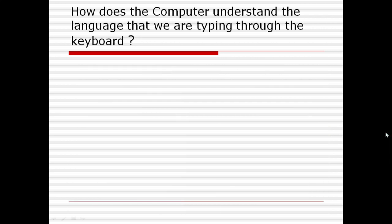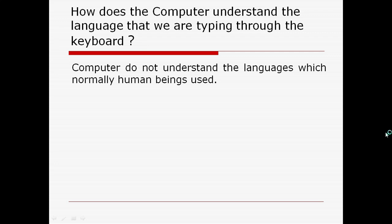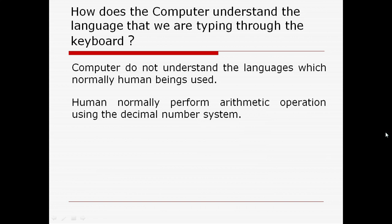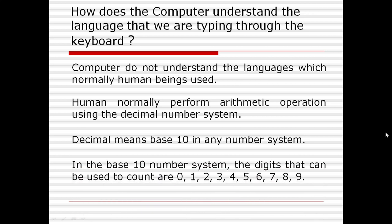Computers do not understand the languages which normally human beings use. Humans normally perform arithmetic operations using the decimal number system. Decimal means base 10 in any number system. In the base 10 number system, the digits that can be used to count are 0, 1, 2, 3, 4, 5, 6, 7, 8, and 9.